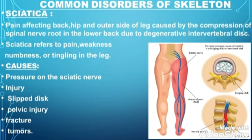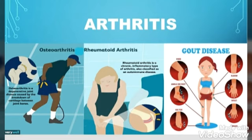There are many causes of sciatica. Number one is pressure on the sciatic nerve — as seen in the diagram, the sciatic nerve arises from the lower back and goes along the entire length of the leg, and when compressed due to degenerative intervertebral disc, it causes pain radiating to the three regions. Other causes include injury, slipped disc, pelvic injury, fracture, and tumors. In the diagram, you can see that slipped disc causes compression of the spinal nerve and causes pain.